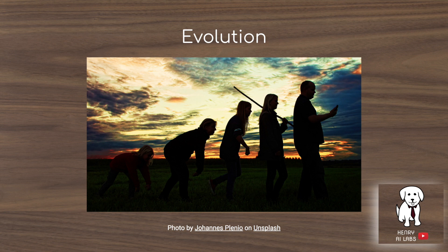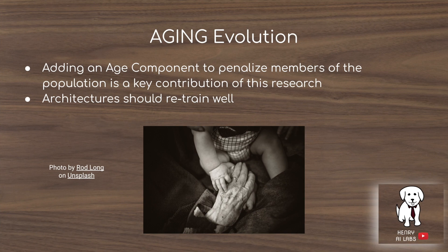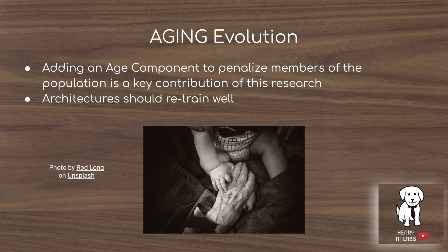The evolutionary algorithm in this paper is really interesting. They modify it by adding an aging component — architectures die from the population by old age, by being in the population too long. They survive and reproduce by being sampled and winning an evaluation of fitness, producing a child model with some mutation. This is interesting because neural network architectures are sensitive to initialization, so having children with slight perturbations makes the architecture more robust to initializations rather than just winning a lucky initialization ticket.